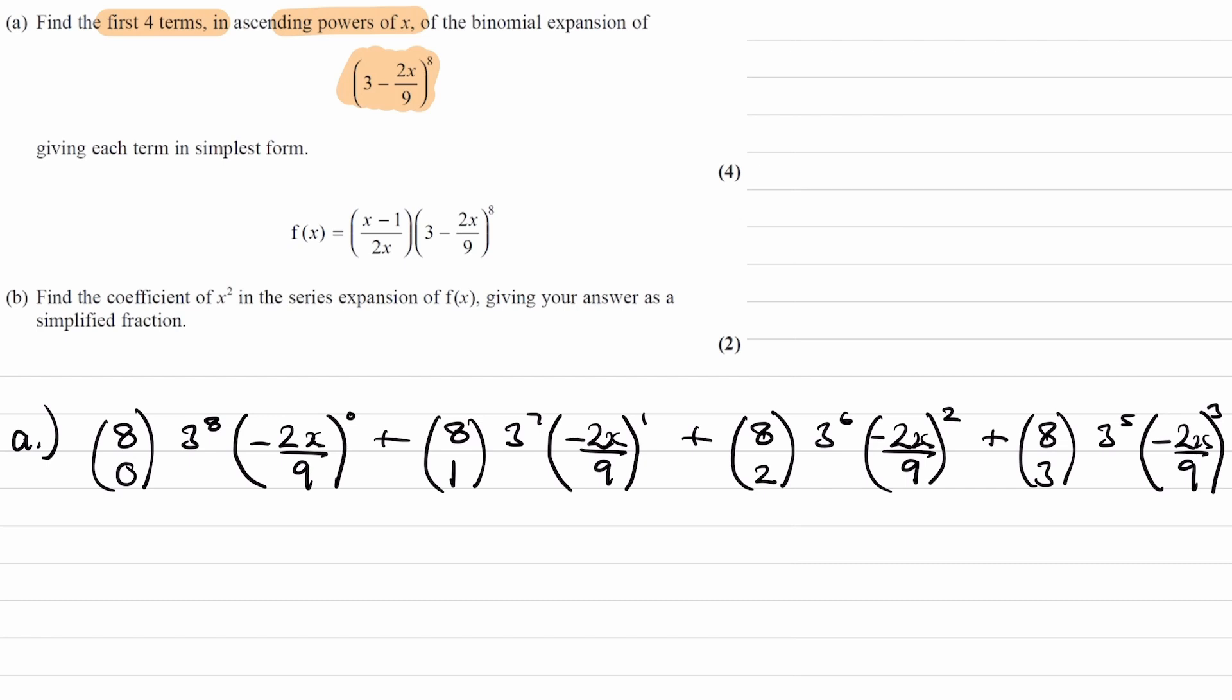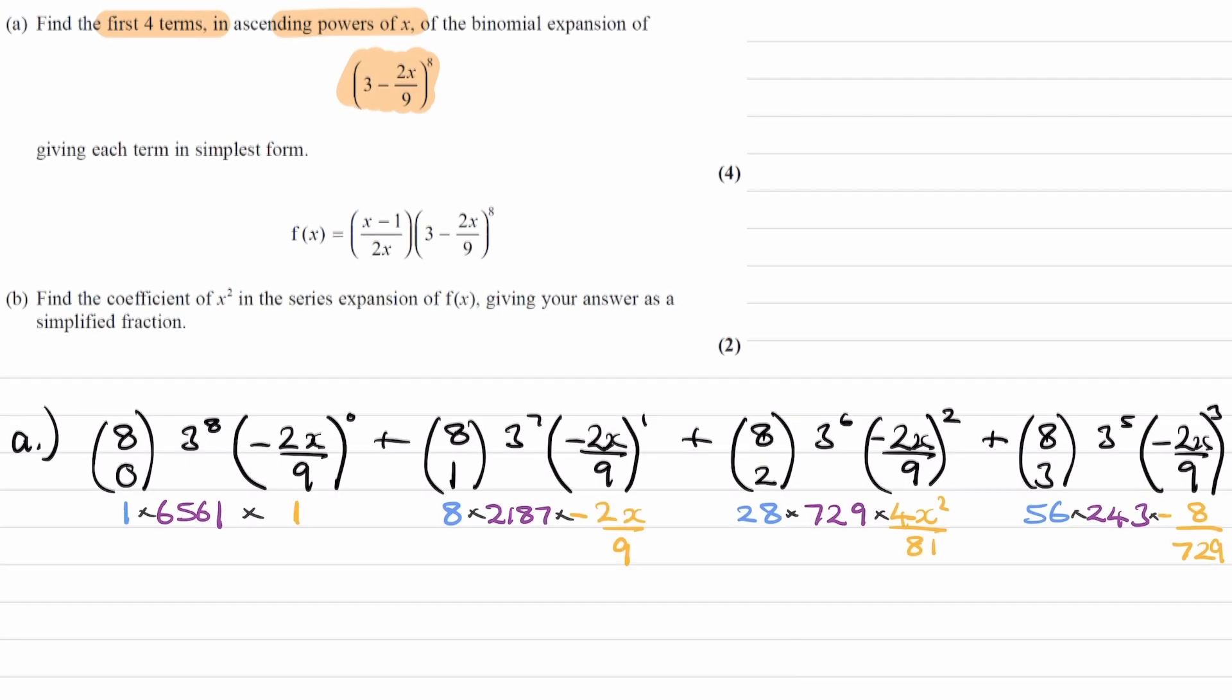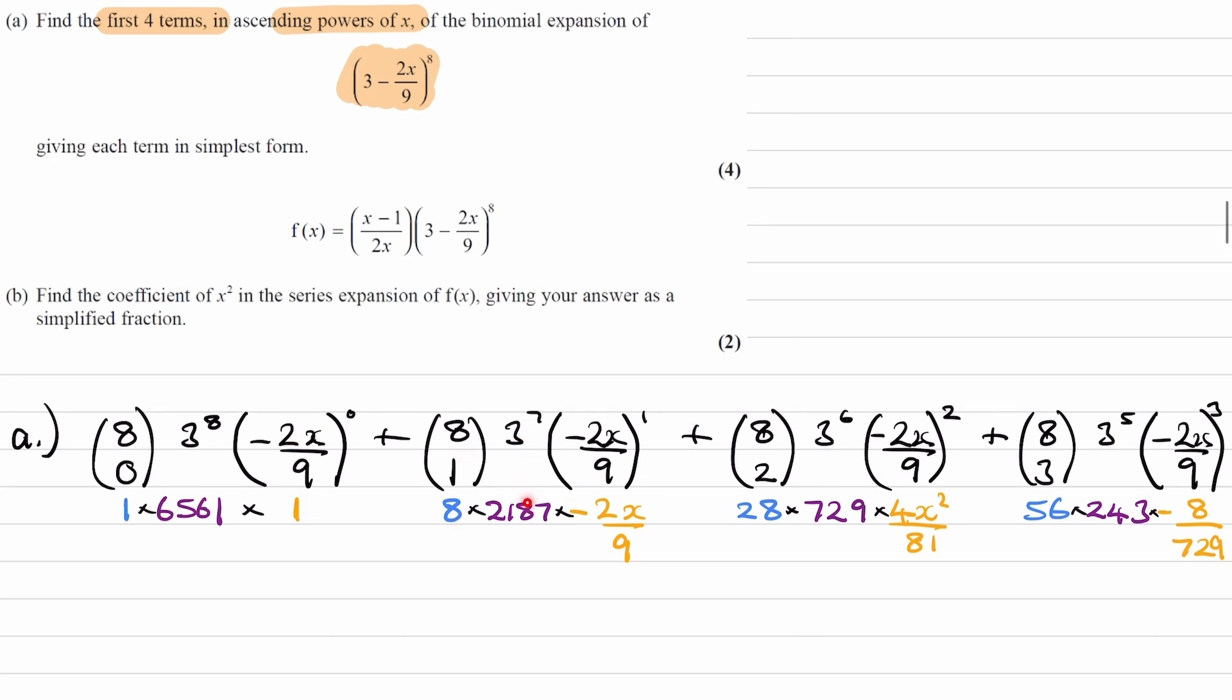I'll now evaluate each of those terms. These are the components of the terms evaluated, and now we can multiply them together. Don't forget the minus signs as well for your odd powers of minus 2x over 9. Now we can multiply these things together, and this is what we get.